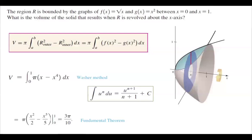This equals 3π/10. You have your π, just plug in 1 and you get 1/2 minus 1/5. Zero doesn't change anything because these terms vanish. If you take a common denominator, you get 3 divided by 10. You have a π in front of it, so you get 3π over 10.